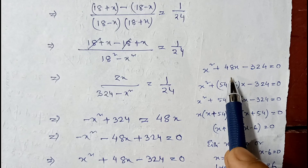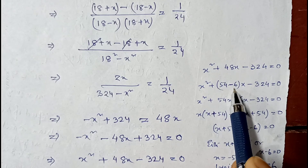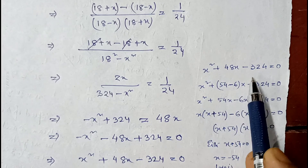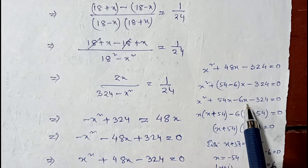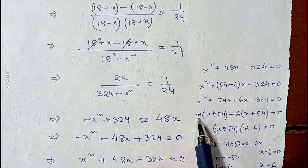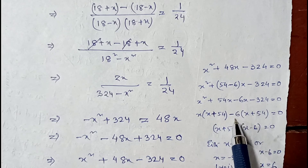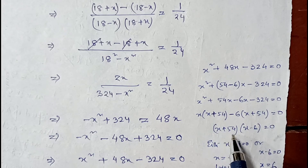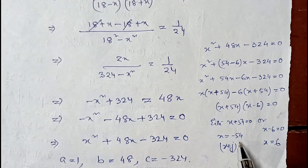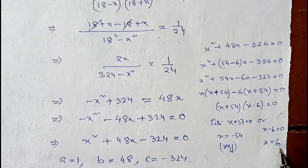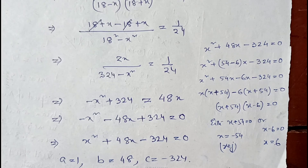Applying middle term factorization — writing 48 as 54 minus 6, since 54 × 6 = 324 — so x² plus 54x minus 6x minus 324 = 0. Factorizing: x(x plus 54) minus 6(x plus 54) = 0, giving (x plus 54)(x minus 6) = 0. So x = minus 54 or x = 6. Speed cannot be negative, so minus 54 is rejected. Therefore the required speed of the stream is 6 kilometer per hour.